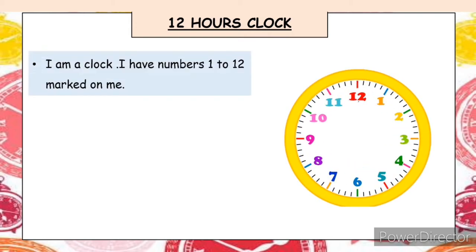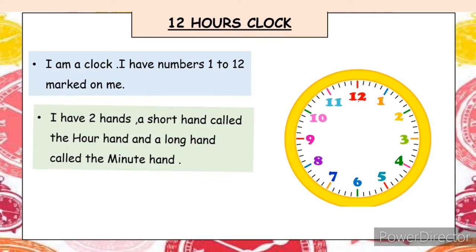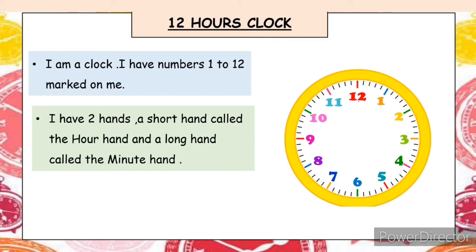As you can see in the picture, the dial has been divided into 12 equal parts and numbers are written from 1 to 12. There are two hands: one is a short hand called the hour hand, and the other is the long hand called the minute hand.